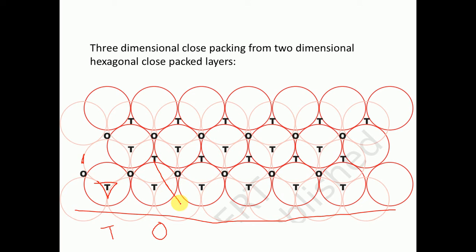For the tetrahedral void, we have three atoms in the lower layer forming a triangle, and one atom from the upper layer sitting above. For the octahedral void, we have atoms arranged such that the upper three atoms form a triangle that is inverted or upside-down compared to the lower three atoms. This inverted arrangement forms the octahedral void.